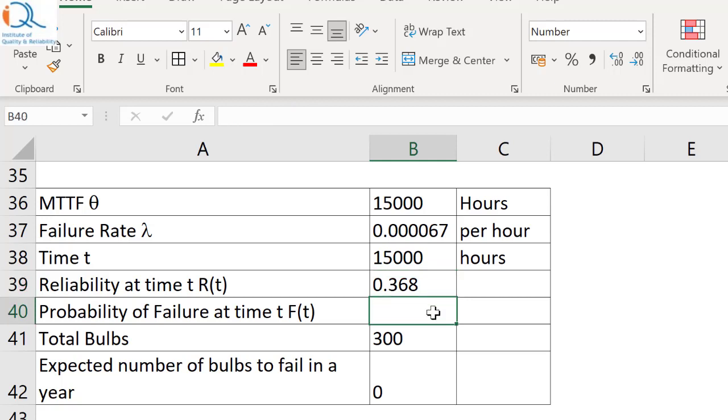Therefore, obviously, the probability of failure will be equal to 1 minus 0.368 or 63.2%. In simple words, probability of failure at time t equal to theta is 0.632.